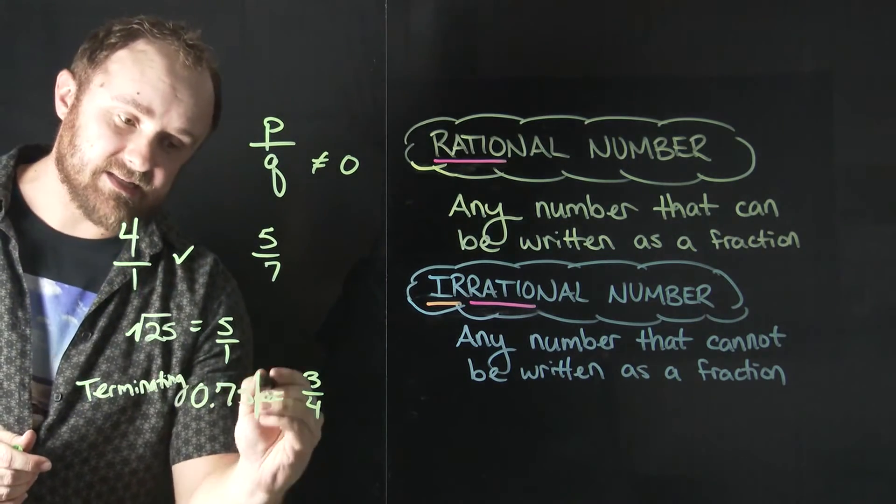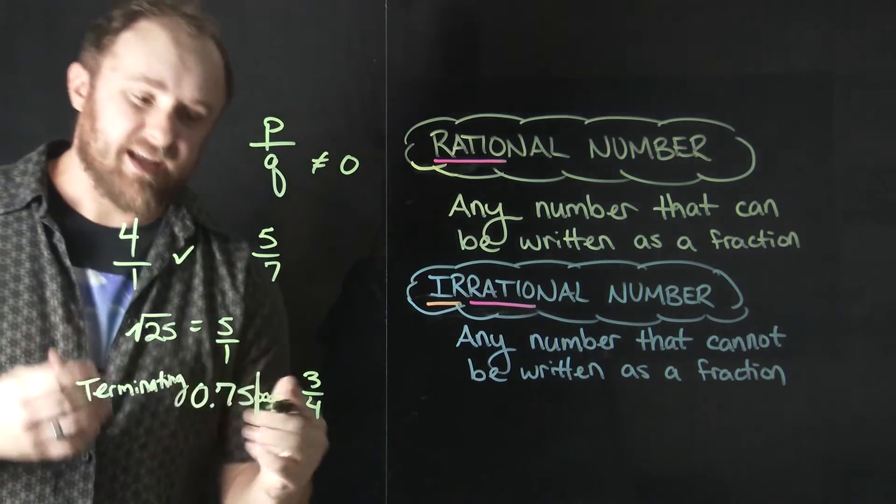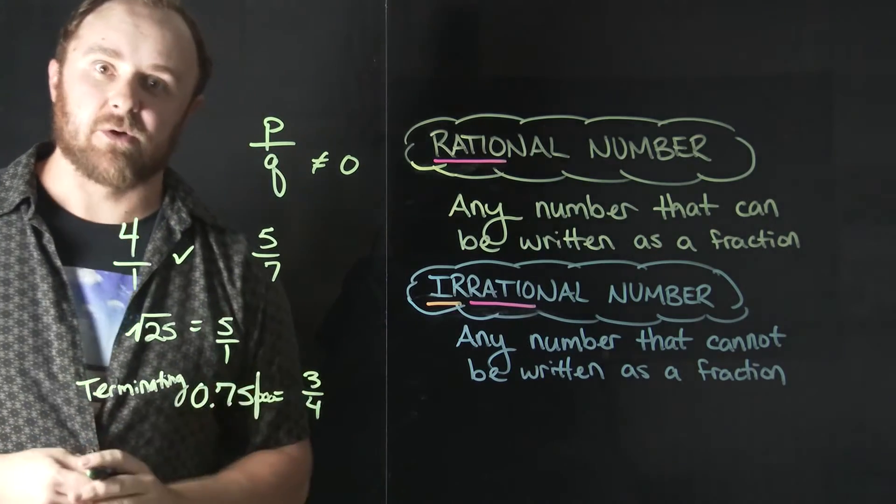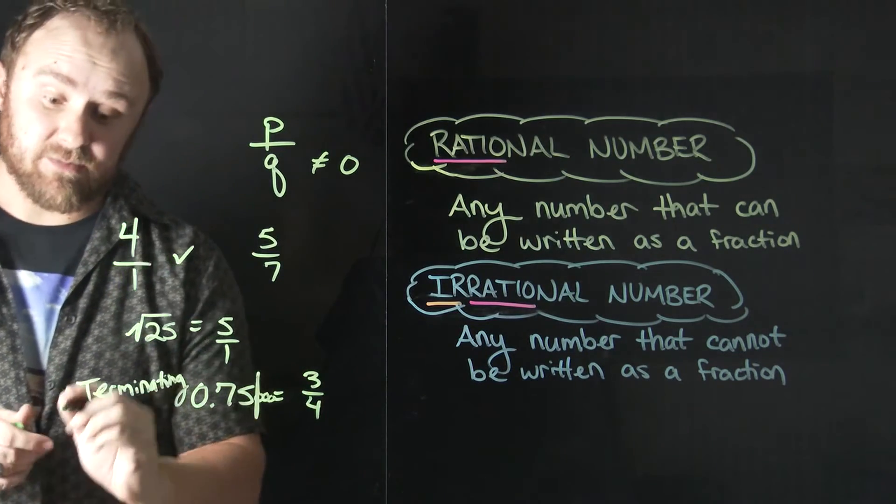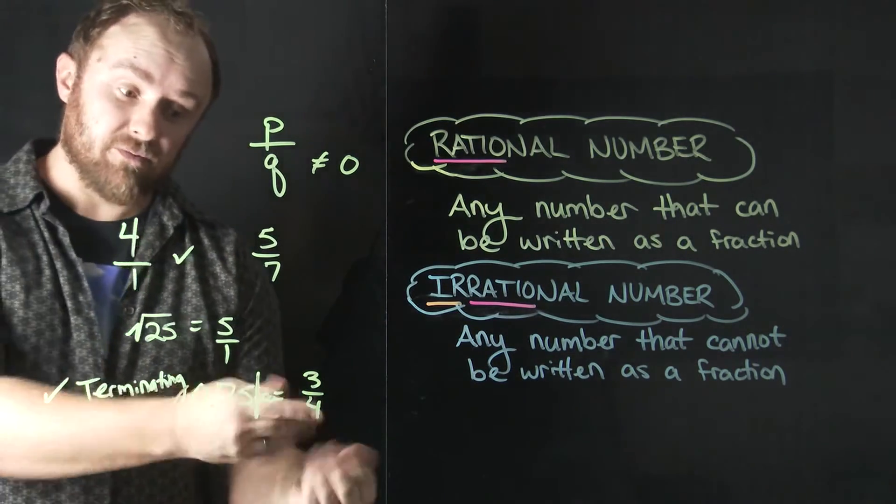Because it terminates, it ends after that five. Or again, it goes on forever with zeros only. So all terminating decimals are rational as well. They can all be written as fractions.